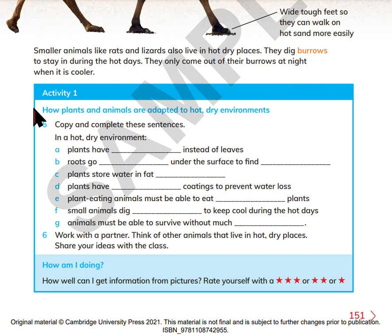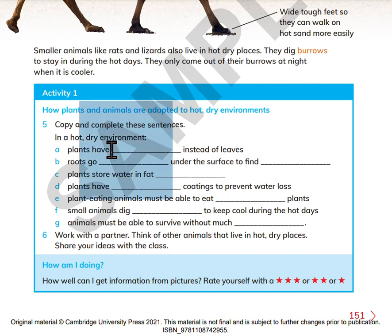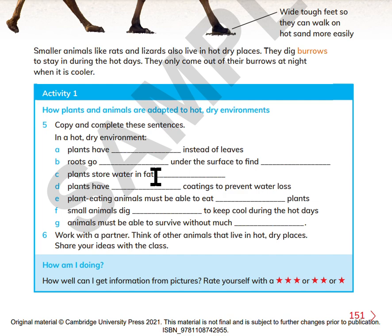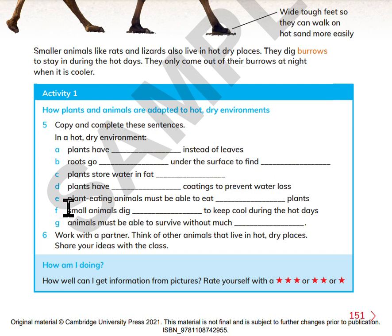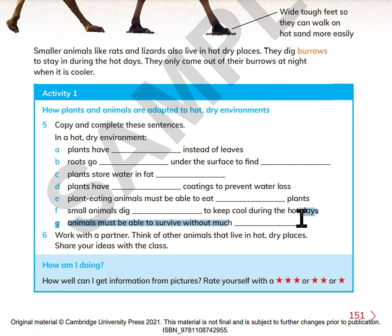Activity 1: How plants and animals are adapted to hot, dry environments. Copy and complete these sentences. In a hot, dry environment, plants have thorns instead of leaves. Roots go deep under the surface to find water. Plants store water and fat. Plants have waxy coatings to prevent water loss. Plant-eating animals must be able to eat tough plants. Small animals stay in burrows to keep cool during the hot days. Animals must be able to survive without much water.